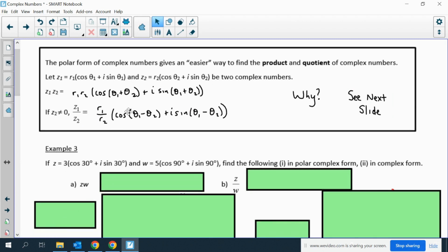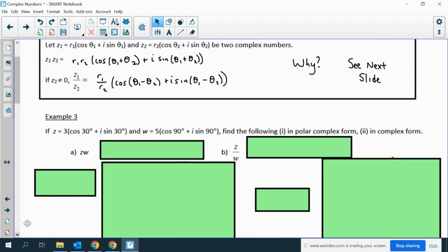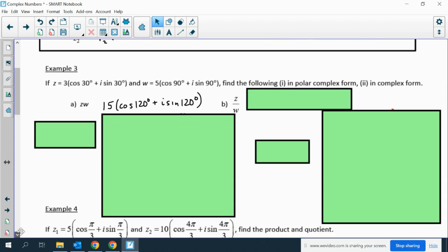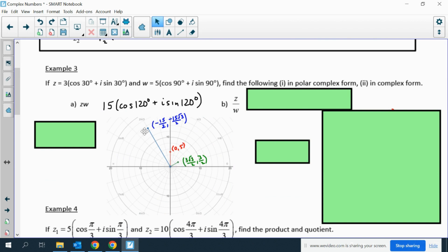Example 3: Basically what we have is a lot of usefulness out of this. If I'm multiplying zw, all I have to do is multiply 3 and 5, I get 15. And then all I have to do is add 30 and 90, so I get 15 times cosine 120 plus i sine 120. Then that's pretty easy to graph. That's up here. So it's a distance of 15 from the radius, and then it's 120 degrees or 2 pi thirds.